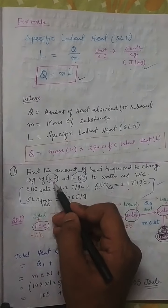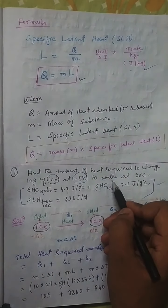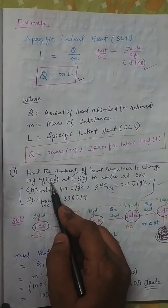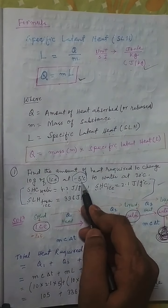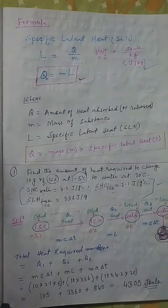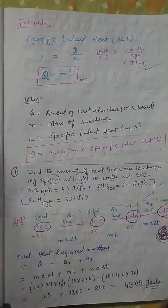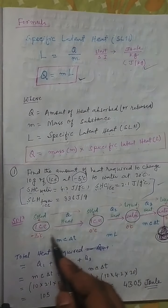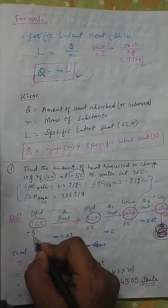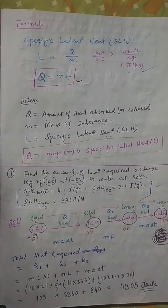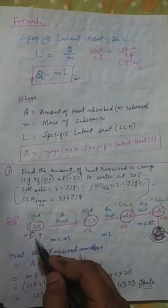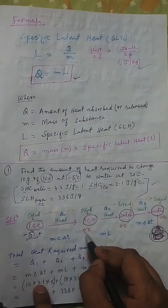Ice is converted into water — there is a change of state. The temperature of the ice is minus 5 degrees centigrade and it is converted into water at 20 degrees centigrade. First, draw this diagram to understand the process. When heat is supplied, the temperature of the ice changes from minus 5 degrees centigrade to 0 degrees centigrade — only the temperature changes here.